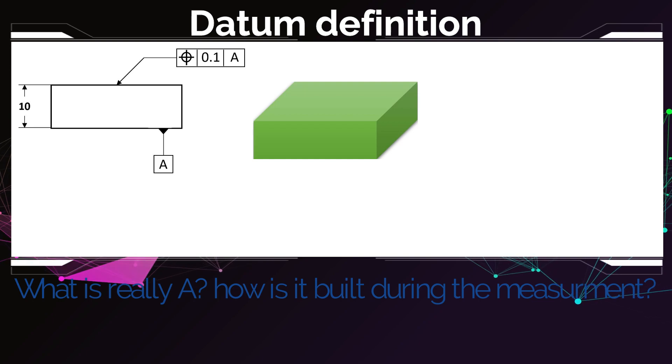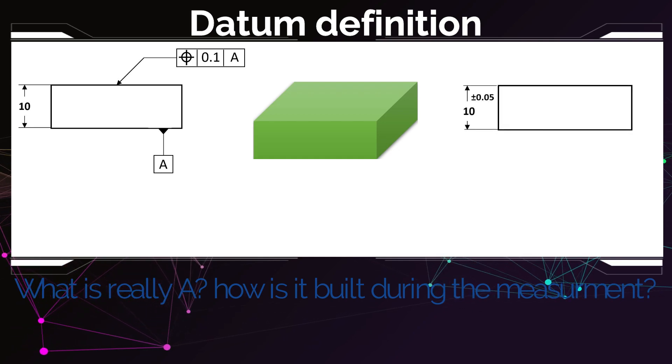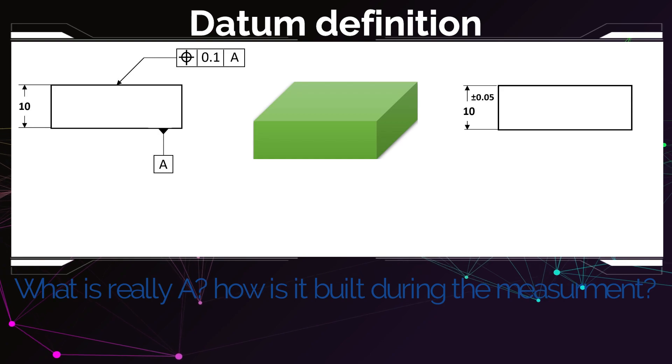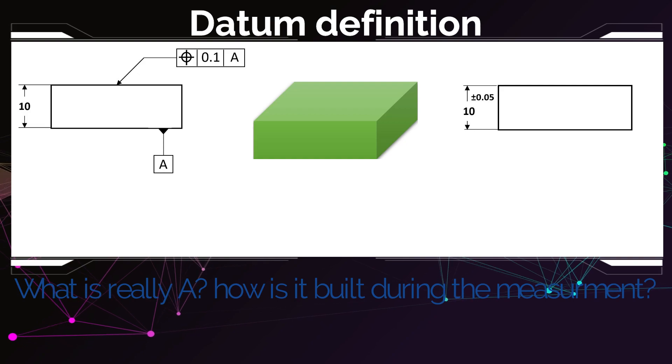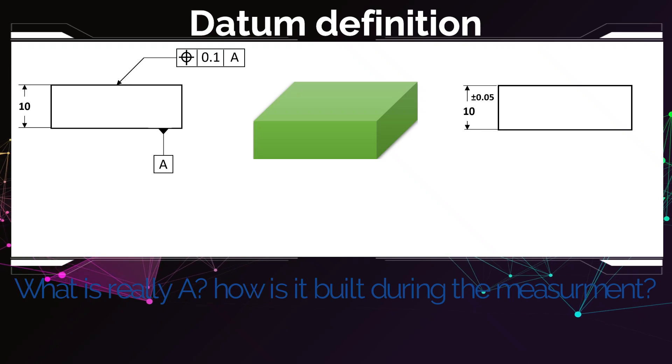Let's look at another way to tolerate this part if we didn't use GD&T here and we just used this plus and minus tolerance 10 plus minus 0.05. At first look it might look the same - the position is 10 and the tolerance is 0.1 in the example with GD&T, which means it can tolerate plus minus 0.05. But the main difference lies in the definition of the datum A.